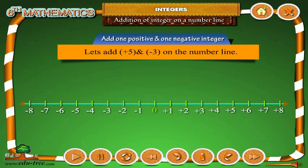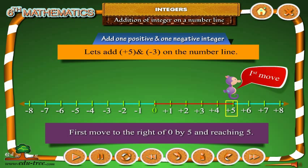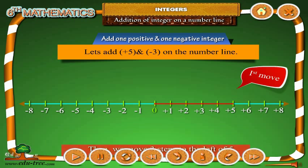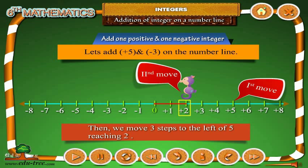Now let us add 1 positive and 1 negative integer. Let us add plus 5 and minus 3 on the number line. First, move to the right of 0 by 5 steps, reaching 5. Then we move 3 steps to the left of 5, reaching 2.